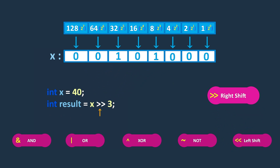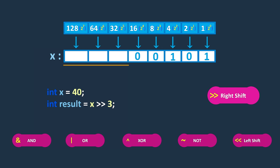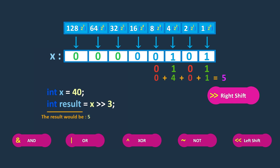The right shift operator shifts the bits of the left-hand operand to the right by a specified number of positions, as determined by the right-hand operand. In this example, shifting x to the right by three positions discards the least significant bits on the right. The original bits of x are shifted three positions to the right, and the vacant positions on the left are filled with the sign bit. Since x is a positive number and the sign bit is 0, the vacant positions on the left are filled with 0's. Therefore, the binary representation of the result is 1010, which is equal to decimal 5. The right shift operator effectively divides the left-hand operand by 2 raised to the power of the right-hand operand.